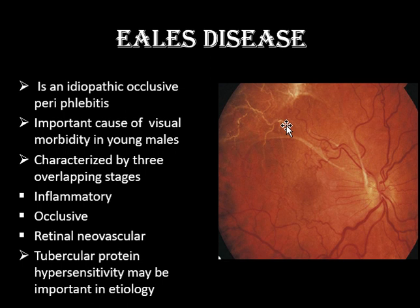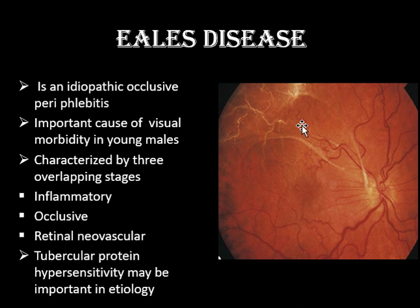In diabetic retinopathy, patients usually present with hard exudates, cotton wool spots, and soft exudates. But Eales disease either presents with signs of inflammation or with sudden vitreous hemorrhage. While diabetic retinopathy can also present with vitreous hemorrhage, it has features of retinal exudation. In Eales disease, patients mainly have periphlebitis and new vessels, and they can present with sudden vitreous hemorrhage.